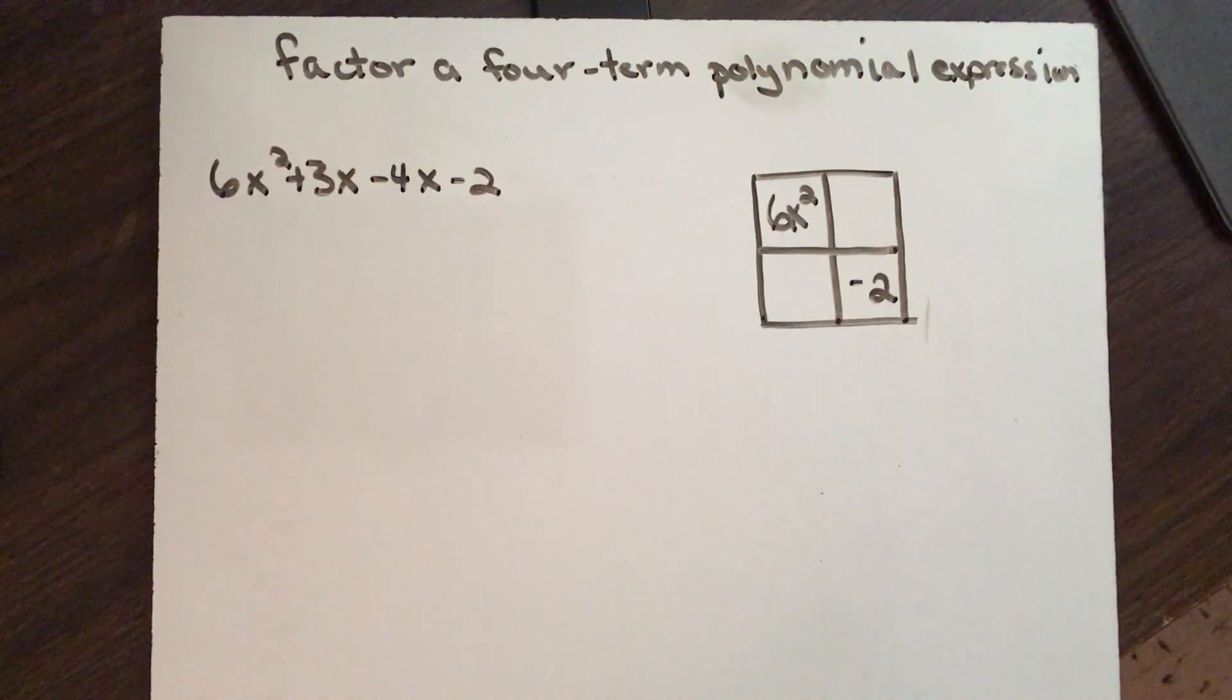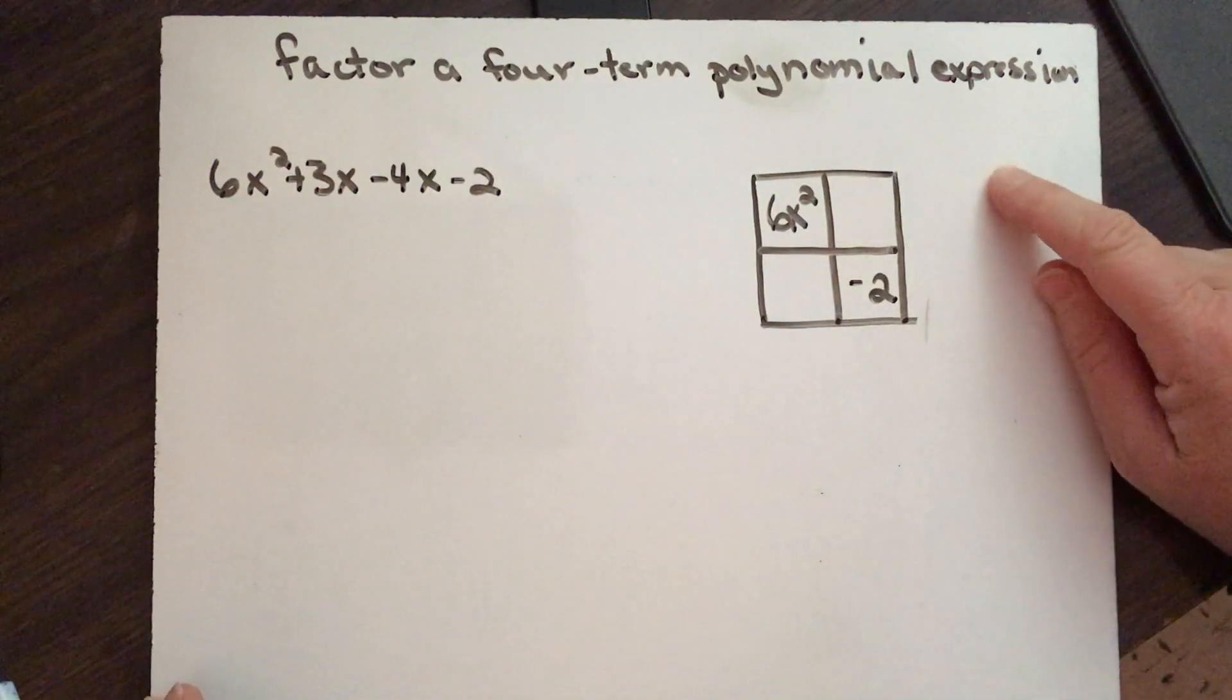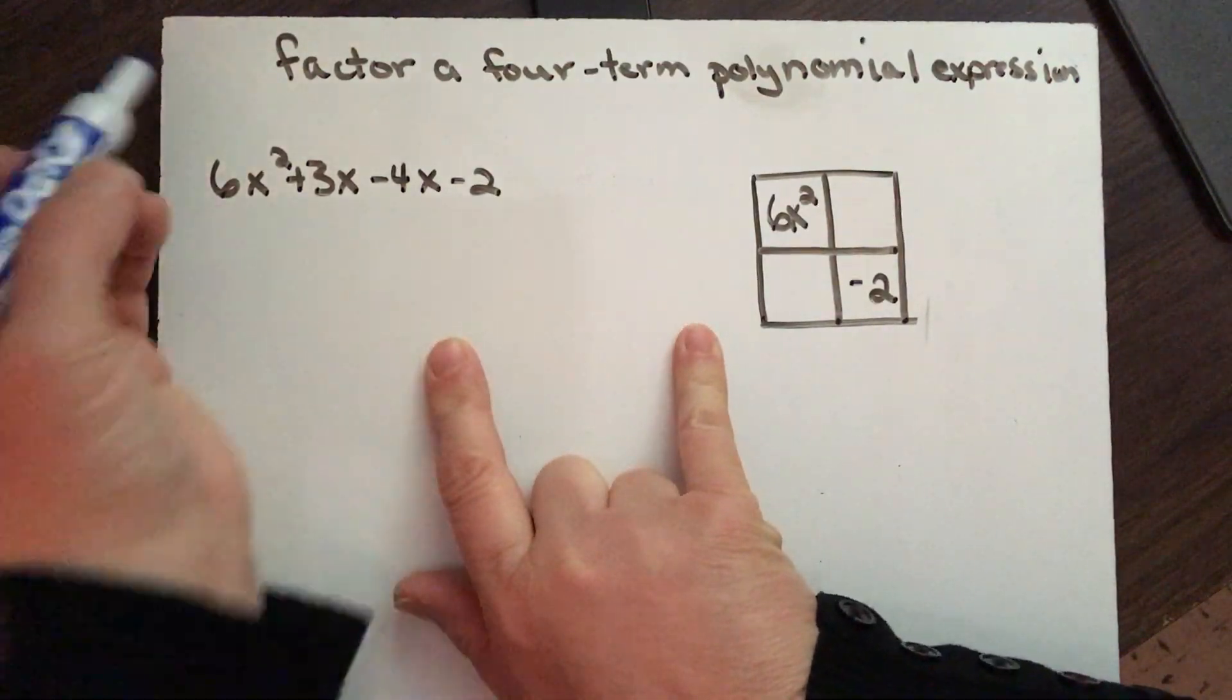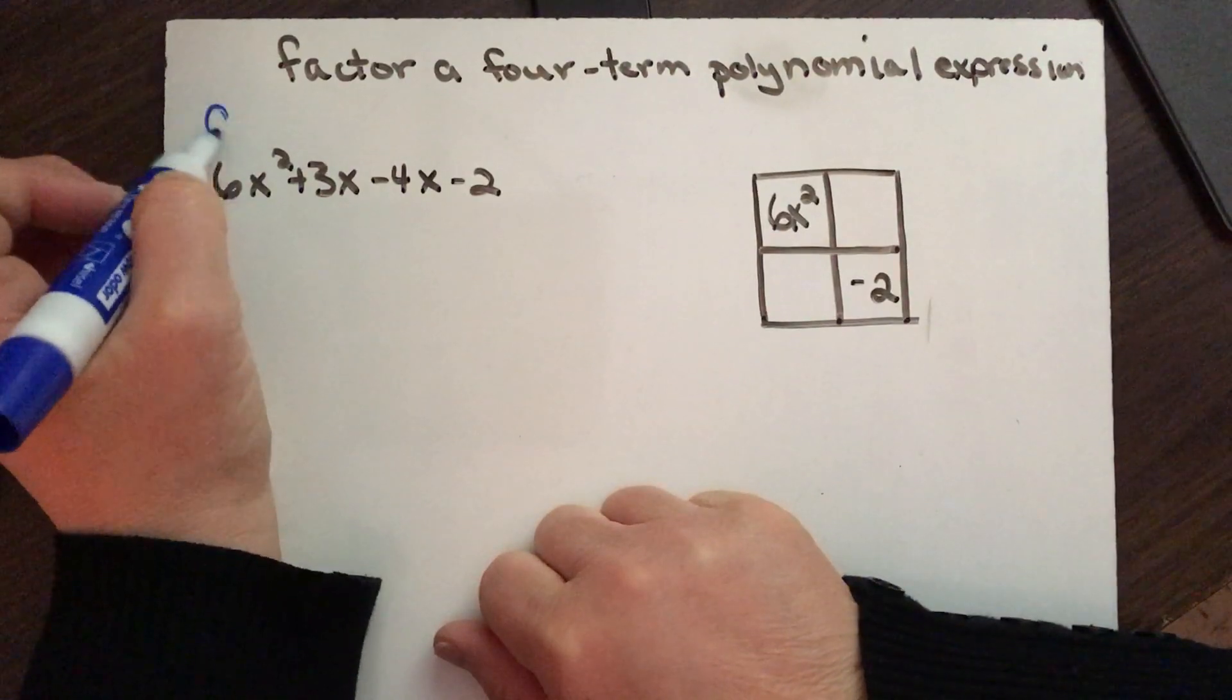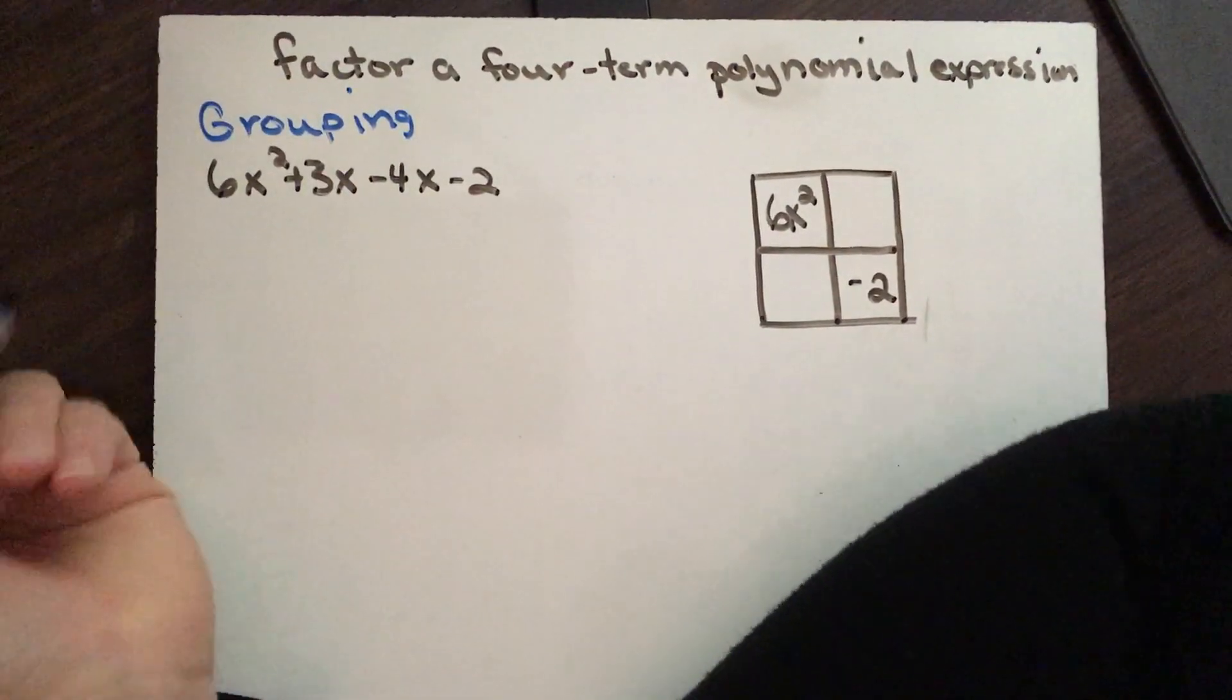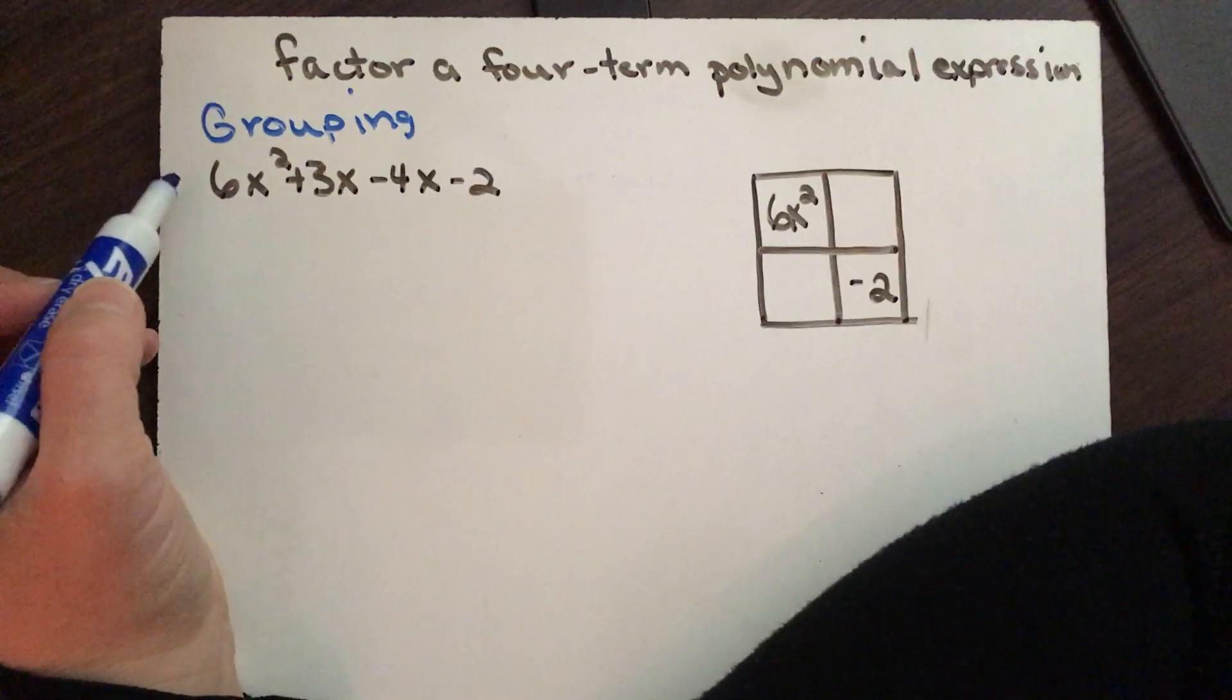Okay, this time we're factoring a four-term polynomial expression and there's two methods I'm going to show you, but the first one is called grouping. So basically you start with doing just that, you start with grouping.